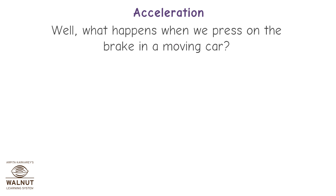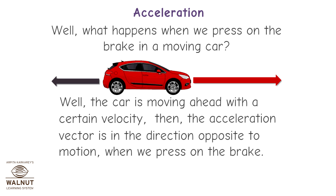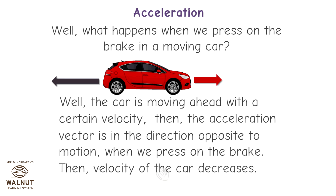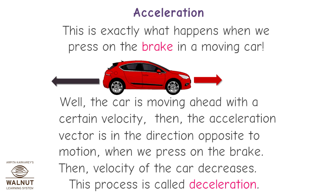This is exactly what happens when we press on the accelerator in a car. What happens when we press on the brake in a moving car? The car is moving ahead with a certain velocity, then the acceleration vector is in the direction opposite to the motion. Then the velocity of the car decreases. This process is called deceleration.